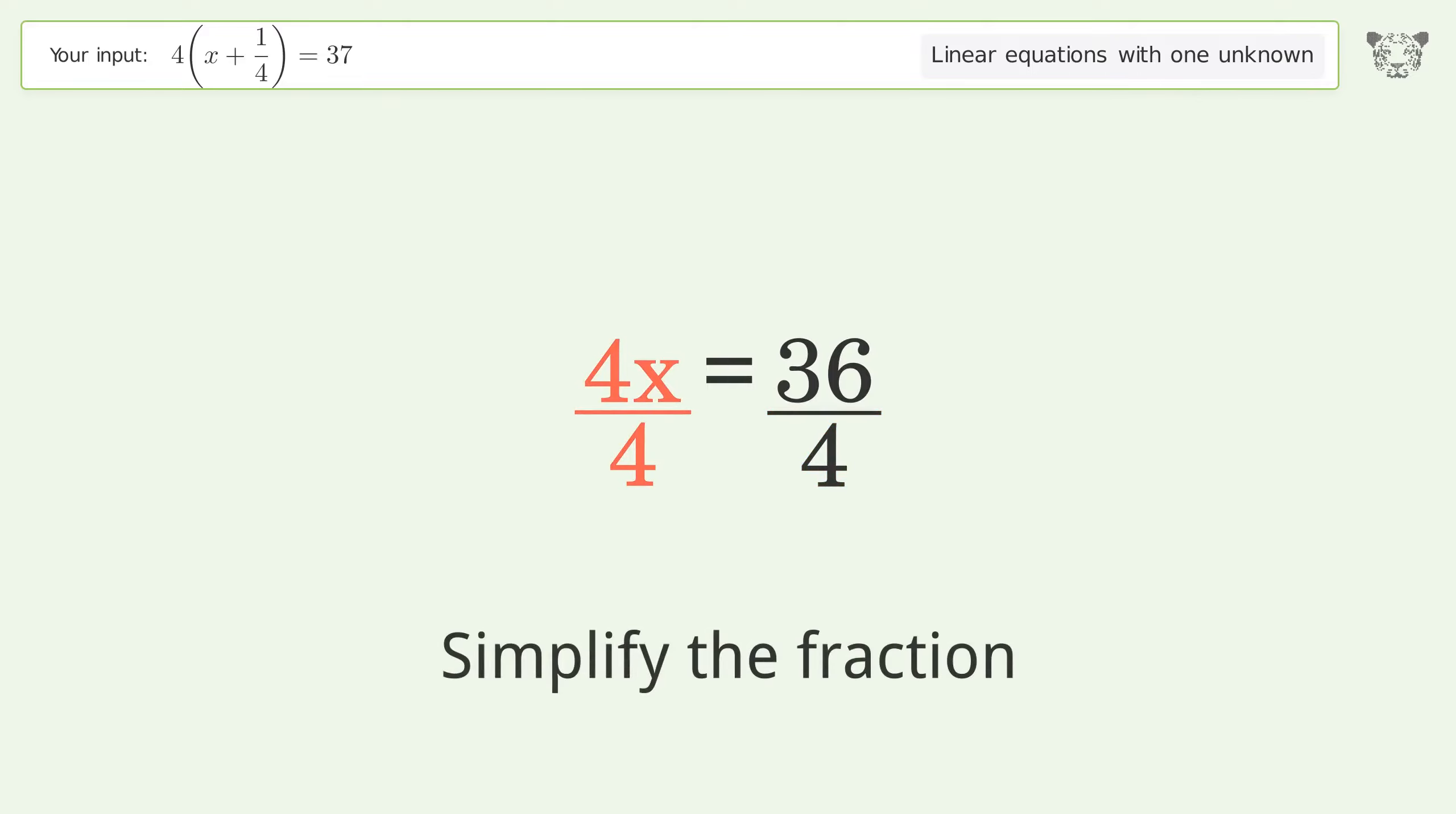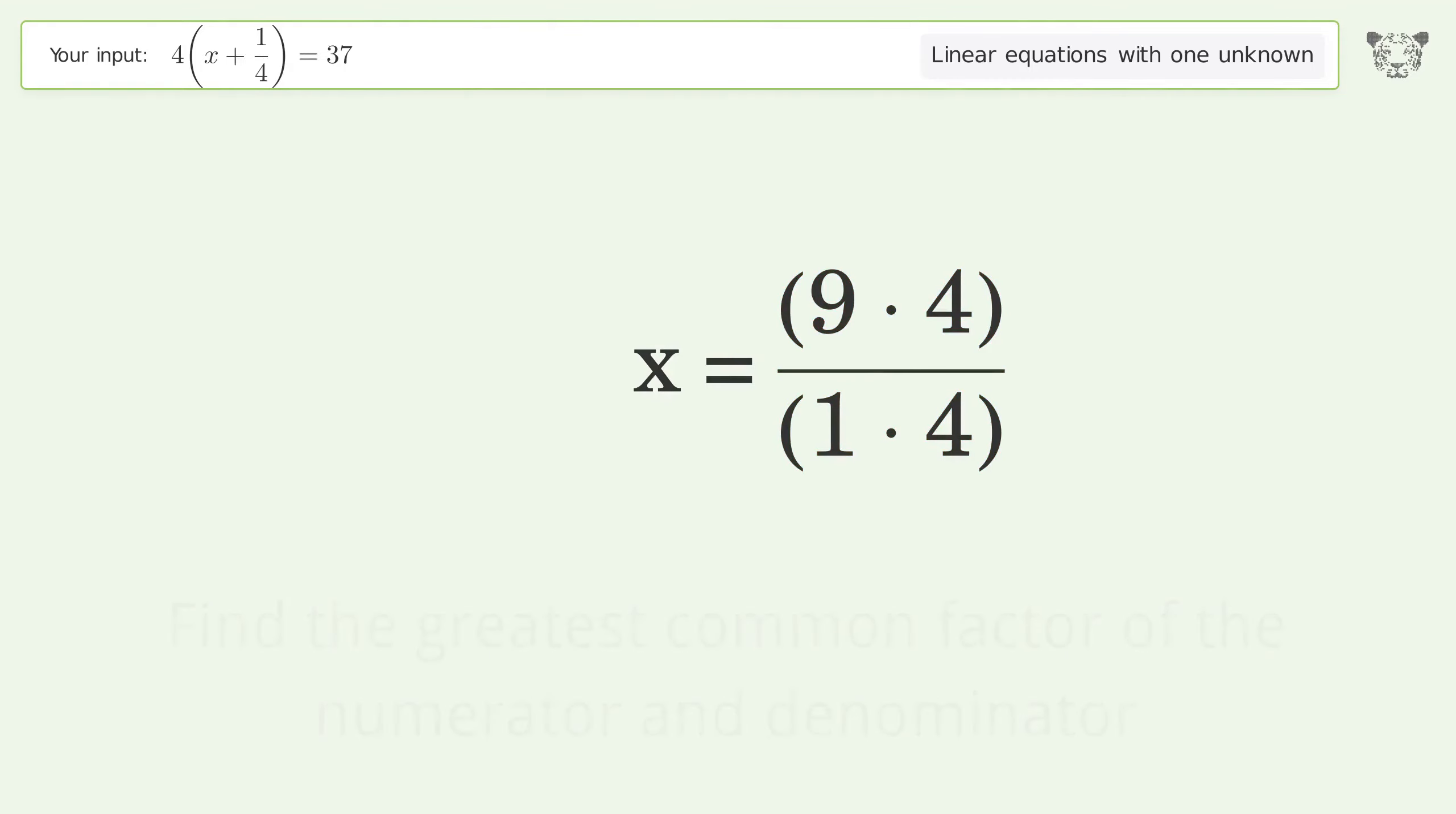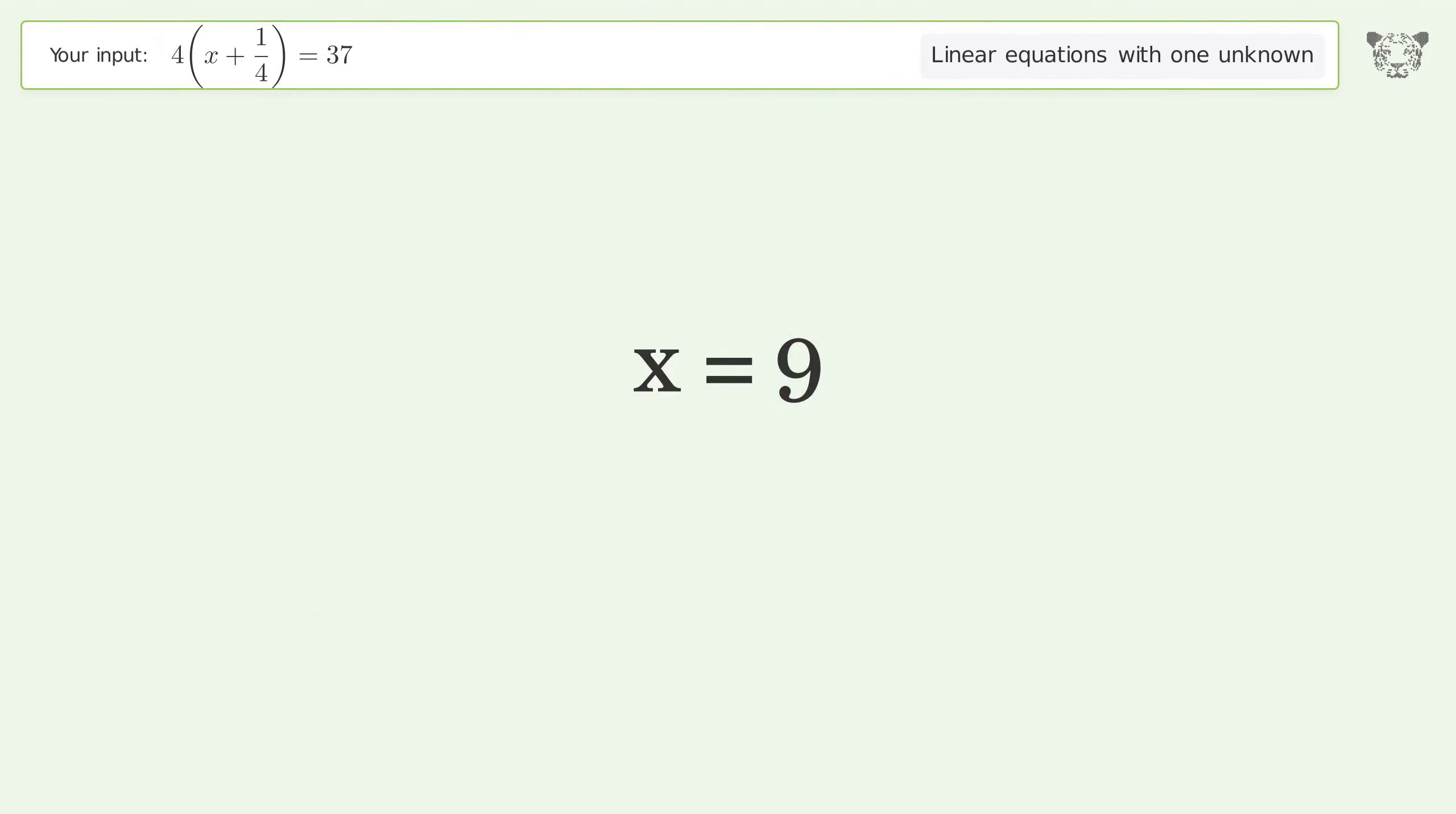Simplify the fraction. Find the greatest common factor of the numerator and denominator. Factor out and cancel the greatest common factor. And so the final result is x equals 9.